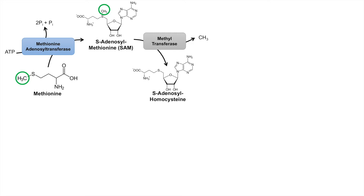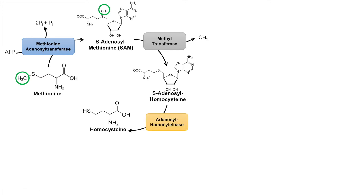Those molecules could be part of catecholamine synthesis, nucleotide synthesis, etc. This leaves us with S-adenosyl homocysteine — the methyl group is no longer attached to the sulfur group. After that, S-adenosyl homocysteine can be acted on by adenosylhomocysteinase, which removes the adenosine group from homocysteine, leaving us with simply homocysteine.